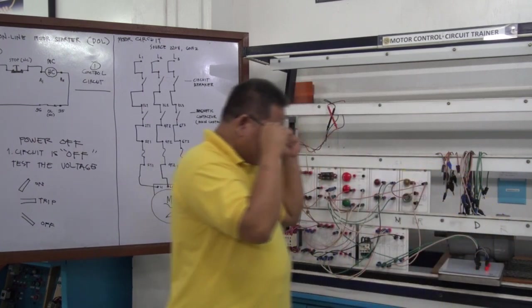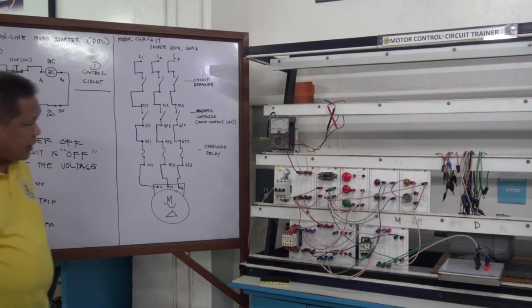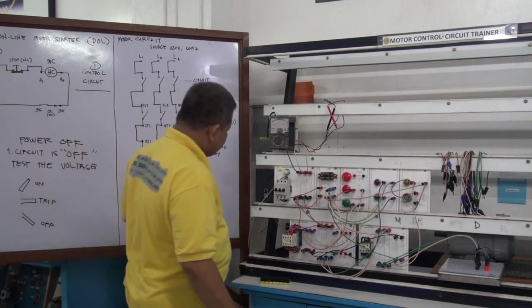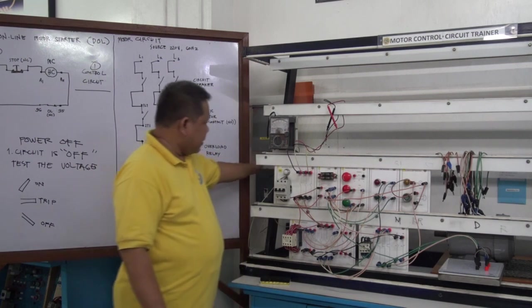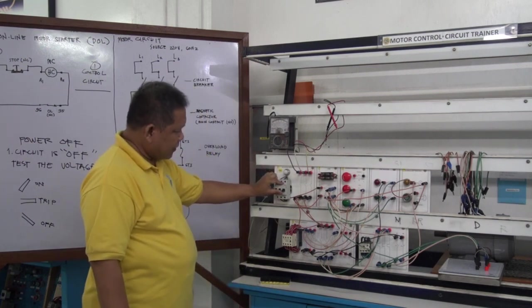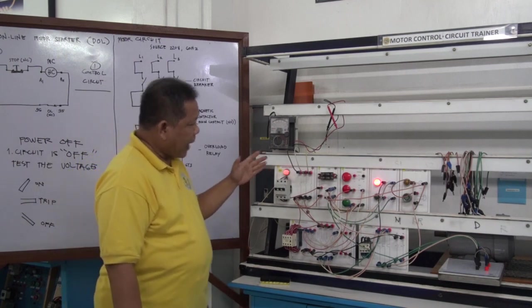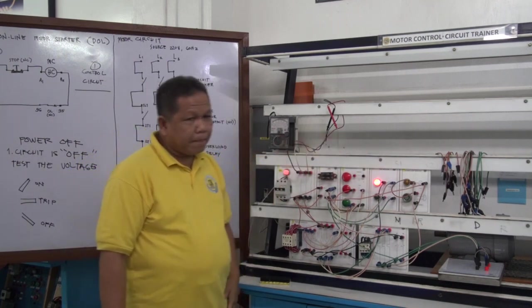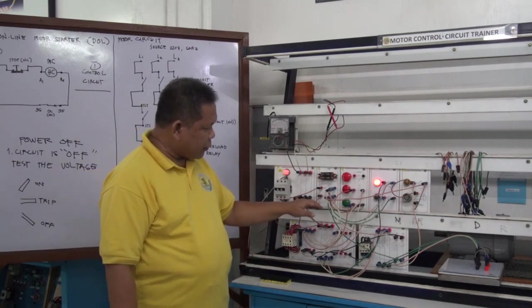We have now finished our connection. We will try the circuit to see if it will operate. Switch on the power source, then switch on the circuit breaker. You will notice that the standby indicator is lit.